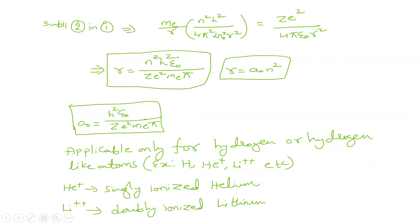So here we can cancel 4π, and R² will be cancelled on both sides. We end up getting R which is N²H²ε₀ over πZe²Me, and here these are all constants.